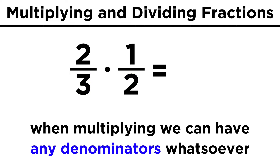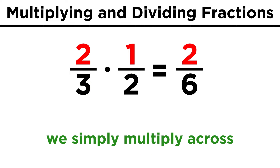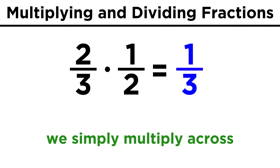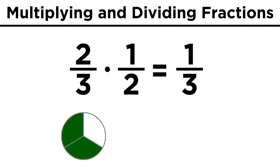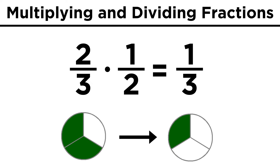Take for example two thirds times one half. On the top, we have two times one, which gives us two. On the bottom, we have three times two, which is six. That gives us two over six, which will reduce to one third. That makes perfect sense, because we had two thirds, so after we cut that in half, we should have only one third left.